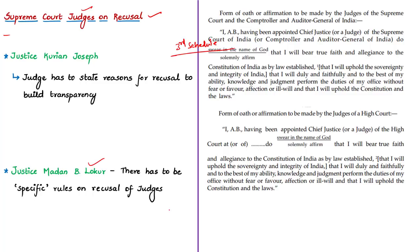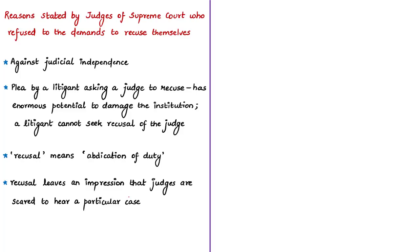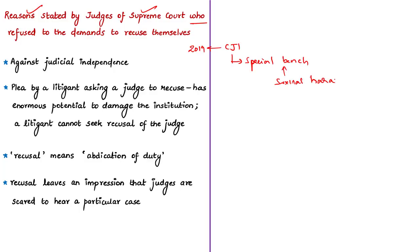Justice Madan B. Lokur observed that there have to be specific rules on recusal of judges, making clear that no such specific rules currently exist. In 2019, the then Chief Justice of India was criticized for setting up a special bench headed by himself that took up the matter of allegations of sexual harassment against the Chief Justice of India who presided over that very special bench.